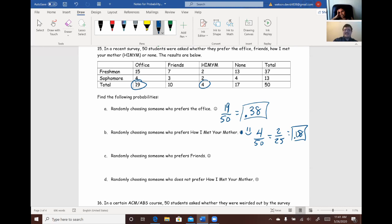It's just like a remake of Friends, which I like Friends. All right. Randomly choosing someone who prefers Friends. So, for Friends, we have 10 students who like Friends. So, we take 10 out of 50. All right. So, we have 10 out of 50. We can reduce that into 1 out of 5. And if we put that as a decimal, it's going to be 0.2.